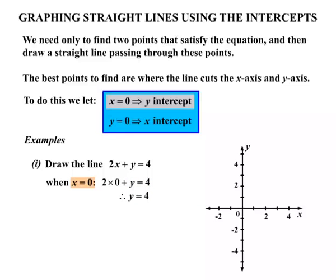So we have x is 0, y is 4. That's the point (0, 4). So we can plot that point on our graph. You can see that's the y-intercept.